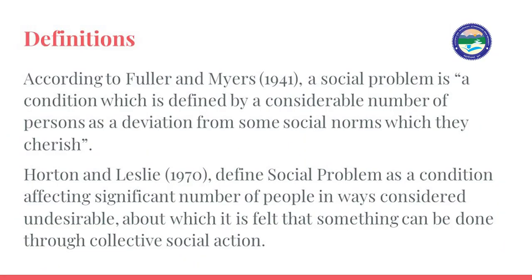According to Fuller and Myers in 1941, a social problem is a condition which is defined by a considerable number of persons as a deviation from some social norms which they cherish. According to this approach, the positive function of a social institution may simultaneously create some harmful or dysfunctional conditions — for example, the practice of Sati.